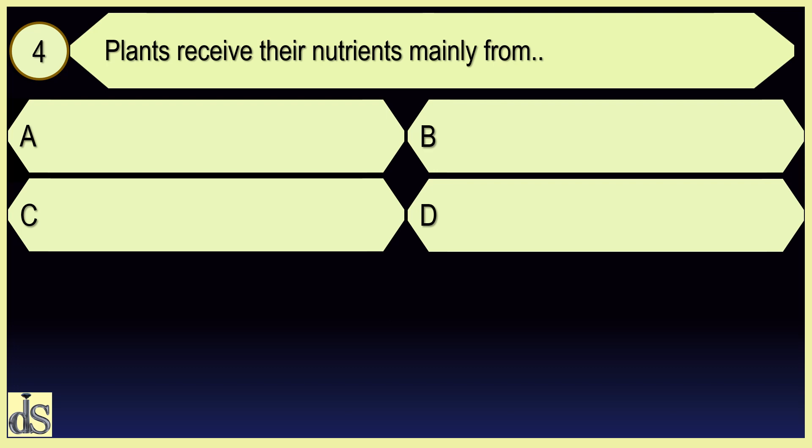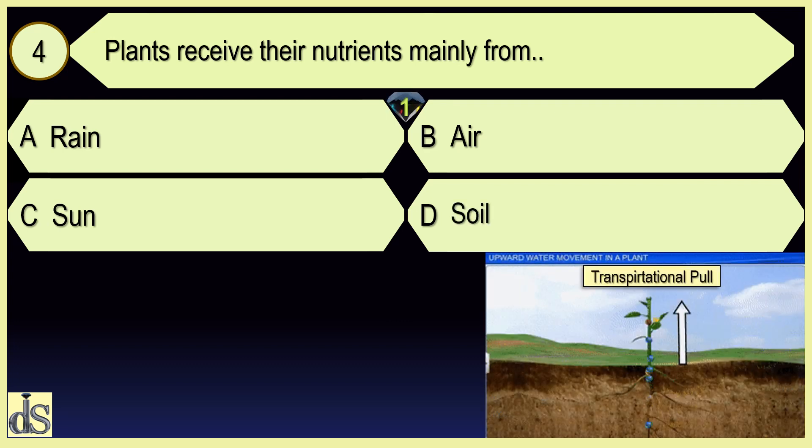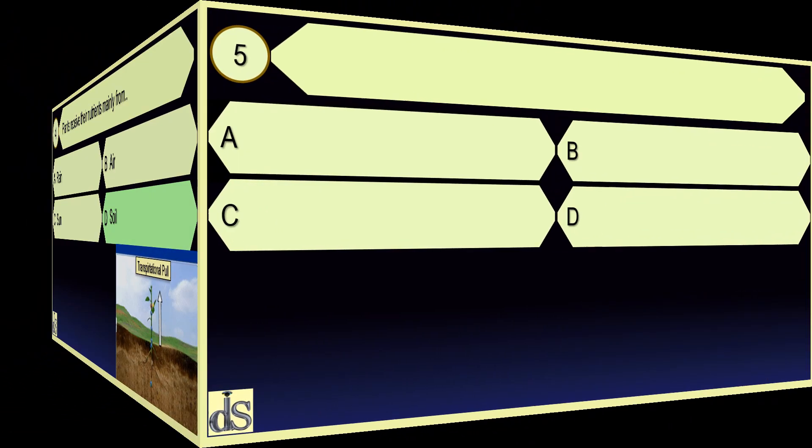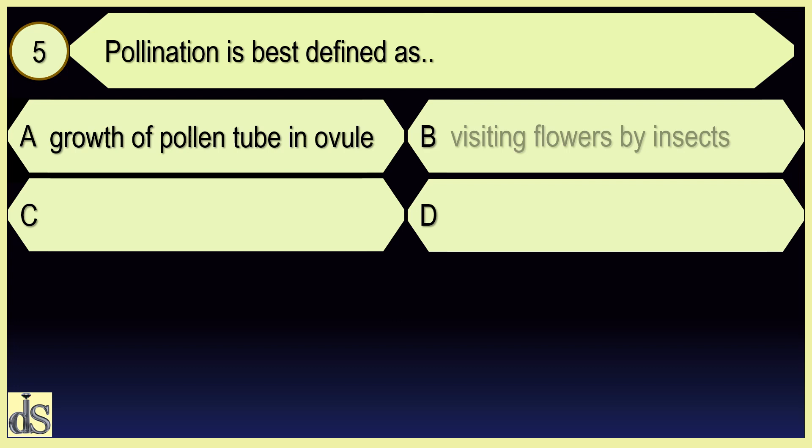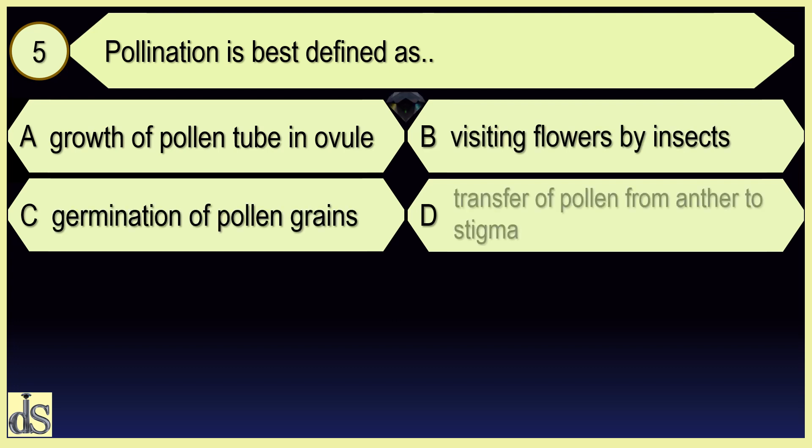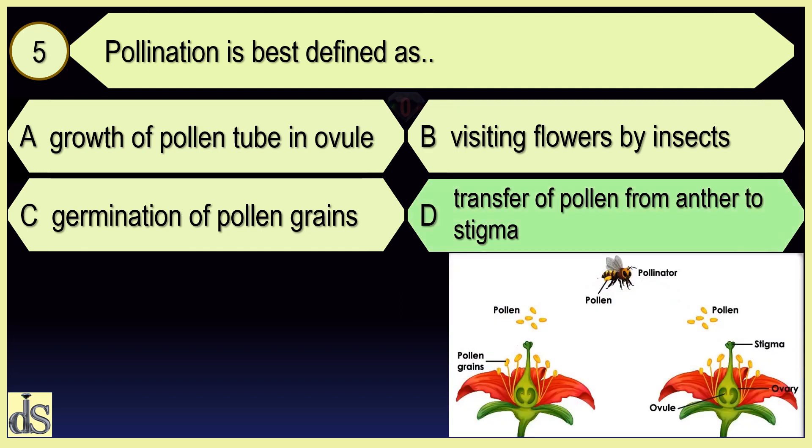Plants receive their nutrients mainly from soil. Pollination is best defined as transfer of pollen from anther to stigma.